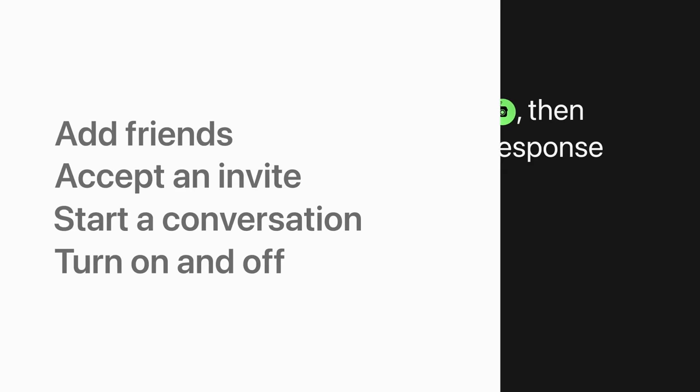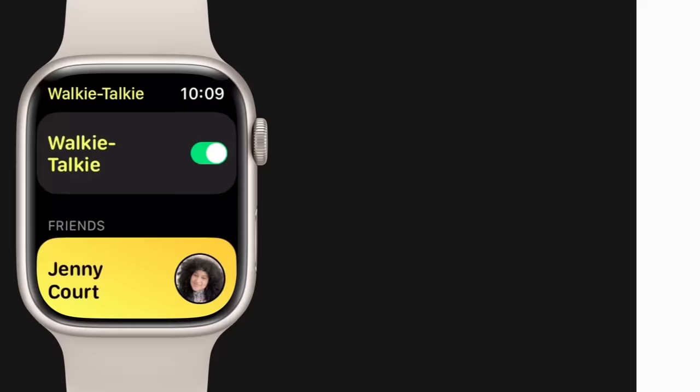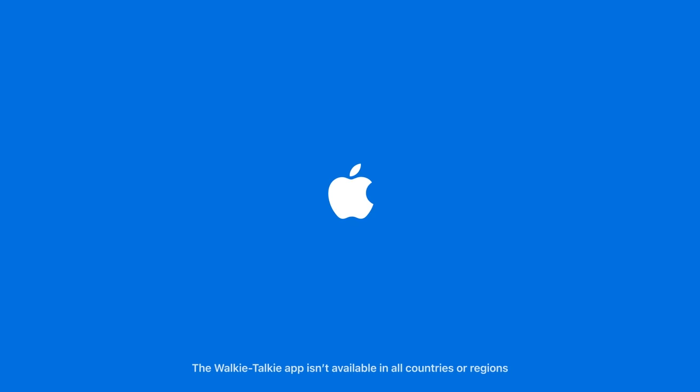To turn Walkie Talkie on or off, open the app, then tap the switch. Over and out. The Walkie Talkie app isn't available in all countries or regions.